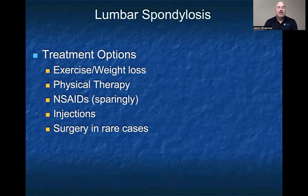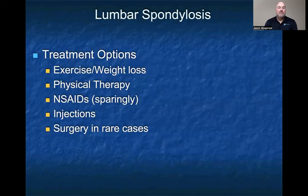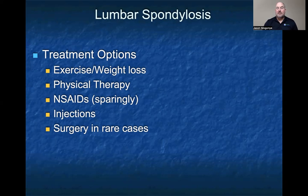Treatment options for spondylosis: osteoarthritis needs to move, so exercise and weight loss is key. Physical therapy for core stability is great. NSAIDs can be used like any other arthritis, but use them sparingly and safely. These patients can benefit from corticosteroid injections into the facet joints themselves. In rare cases, patients may require surgery if their pain continues or the segments become unstable.